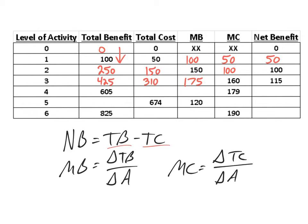In the next row, we know total benefit is $605 and marginal cost is 179. If marginal cost is 179, total cost must have gone from 310 to 489, because the change in total cost of 179 divided by the change in activity of one gives us a marginal cost of 179. Taking 605 minus 489 gives us a net benefit of 116. And marginal benefit is the change from 425 to 605, which is 180.